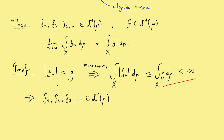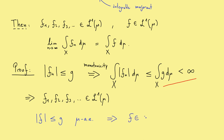Obviously we can do the same for f instead of fn, because we know it is the pointwise limit almost everywhere. Therefore the inequality holds almost everywhere, and by the almost-everywhere monotonicity property, we get the same inequality for the integral of f. In other words, we also have f in L1.